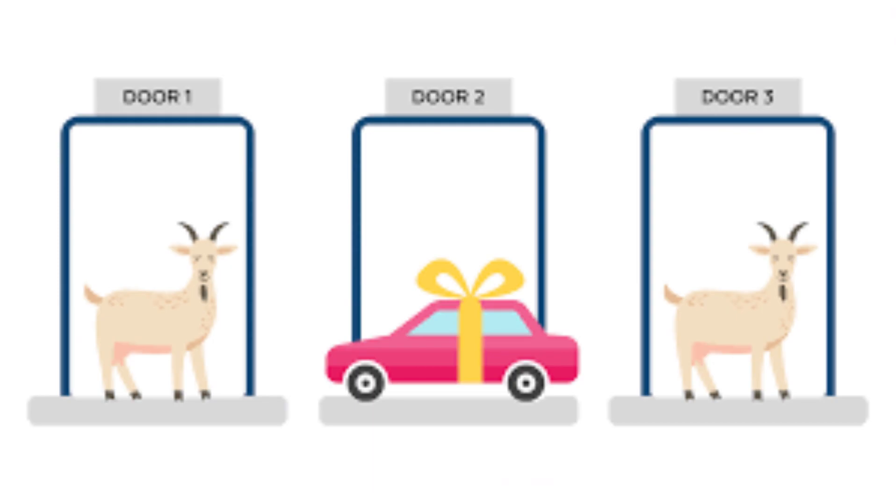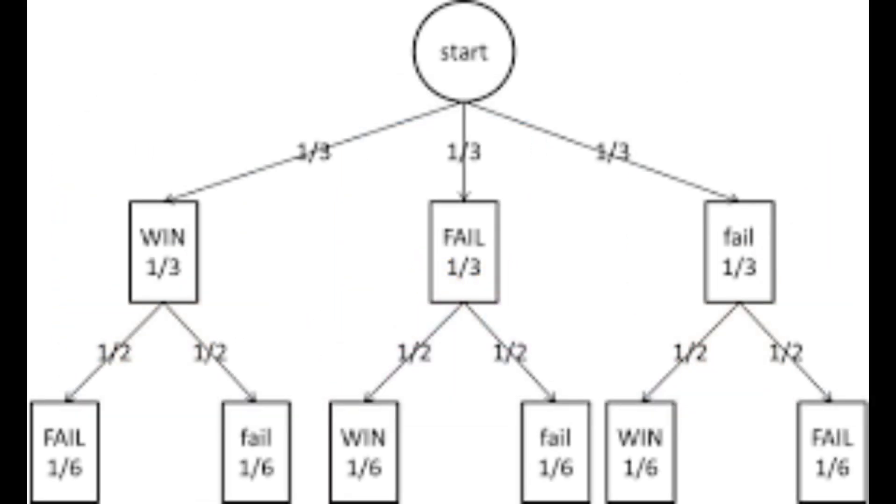The key to solving the Monty Hall paradox lies in understanding probability, and how the situation changes when Monty reveals a door. When you first choose a door, there's a one-in-three chance, or 33.33%, that you picked the car, and a two-in-three chance, or 66.67%, that you picked a goat.